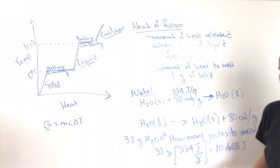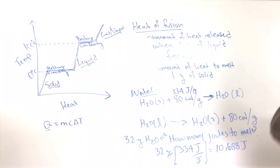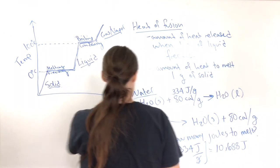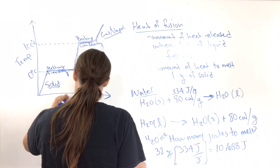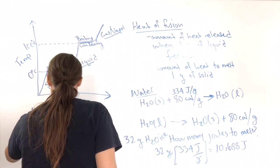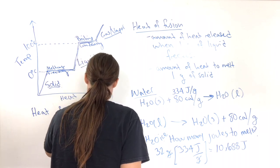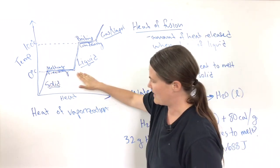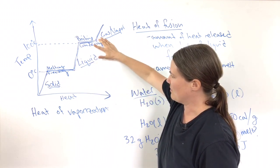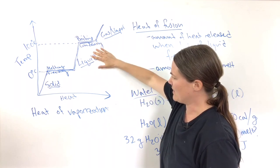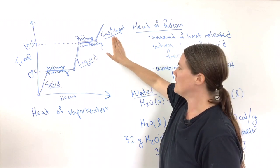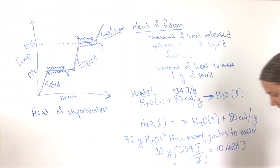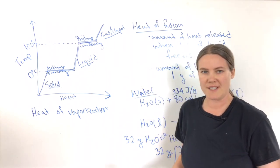So this is the heat of fusion. Now, I want to talk about the heat of vaporization. The heat of fusion is for the melting/freezing point on our curves. For the heat of vaporization, we're at the boiling/condensation point — either going from a liquid to a gas (vaporizing) or from a gas to a liquid (condensing). This is defined the same way as the heat of fusion, except we're referring to vaporization or condensation.